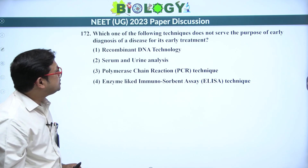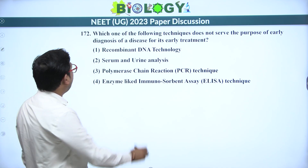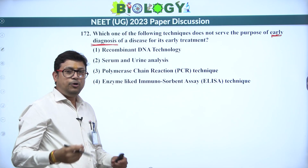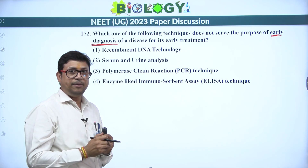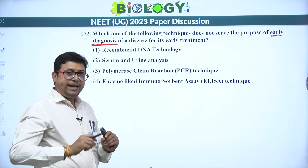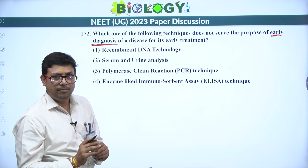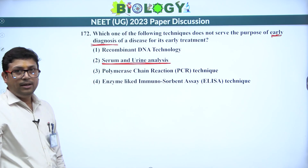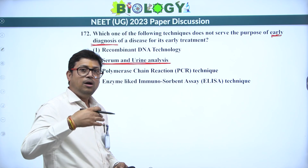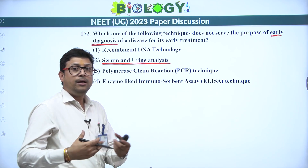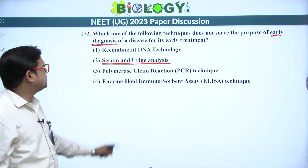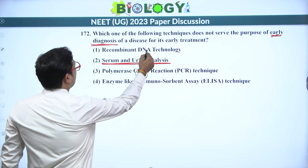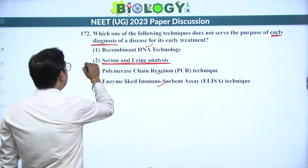Next: which technique does not serve the purpose of early diagnosis of a disease? Early diagnosis means within a few days of infection. At that stage, the expression of the pathogenic gene is very low or nil. Serum and urine analysis can only be done when pathogenic protein is properly expressed in large quantity — that occurs at a later stage, not early stage. So serum and urine analysis is not used for early diagnosis. Recombinant DNA technology, PCR, and ELISA are used for early diagnosis. Answer is the second option.